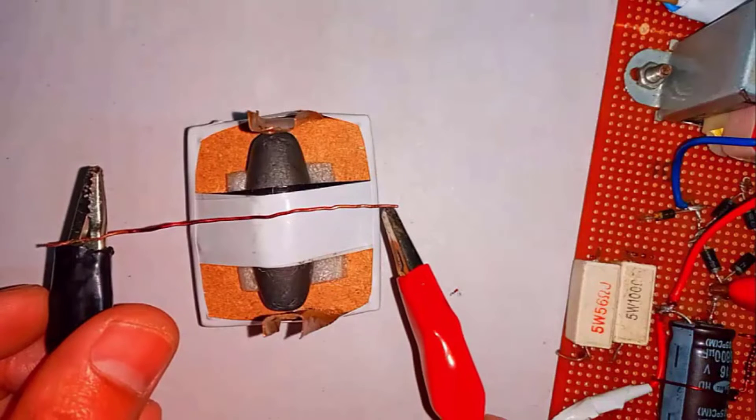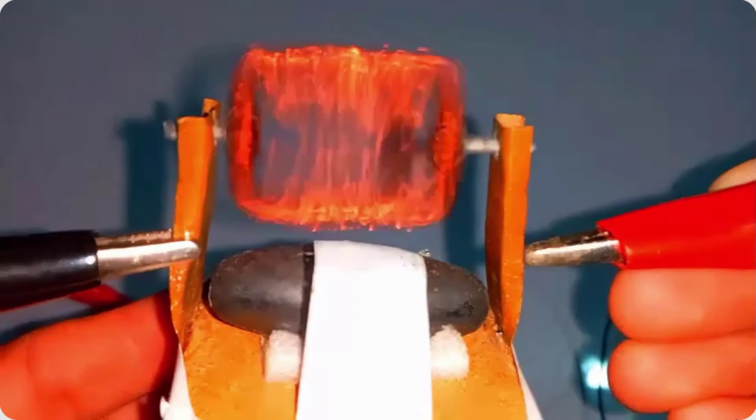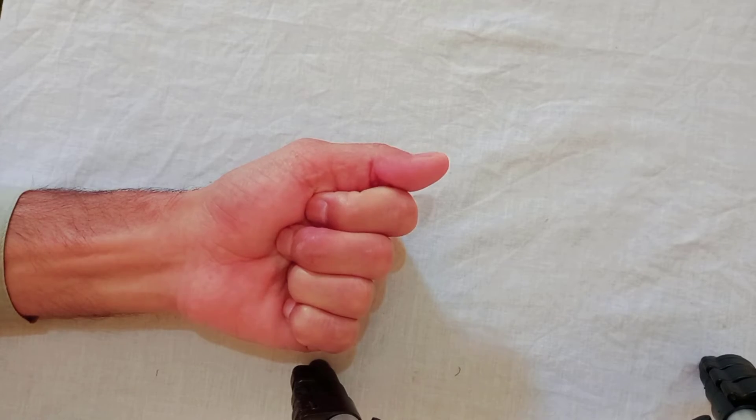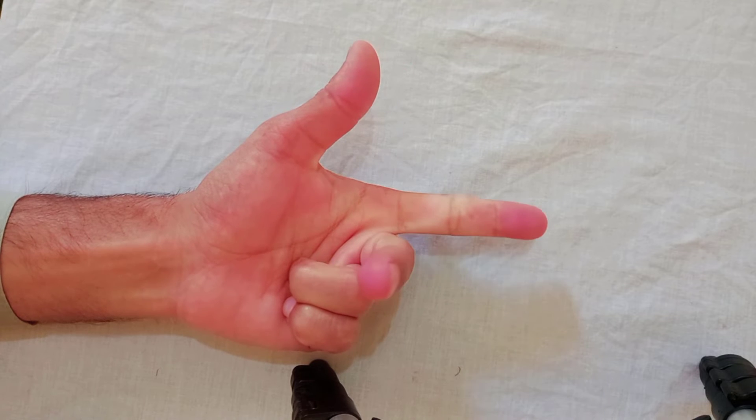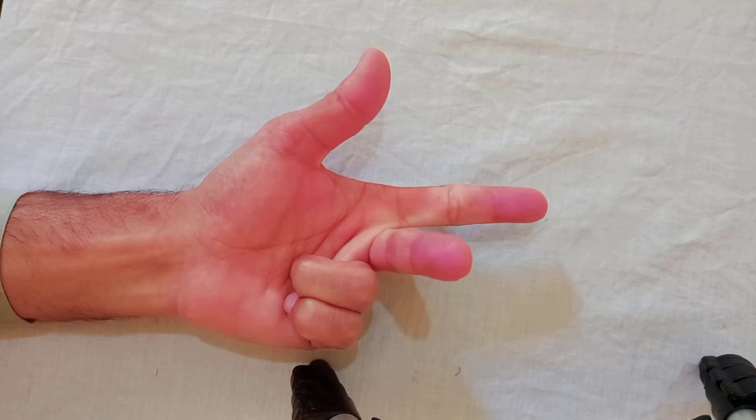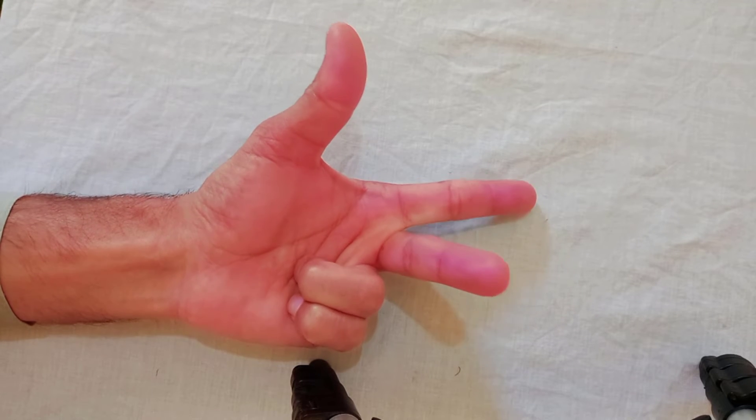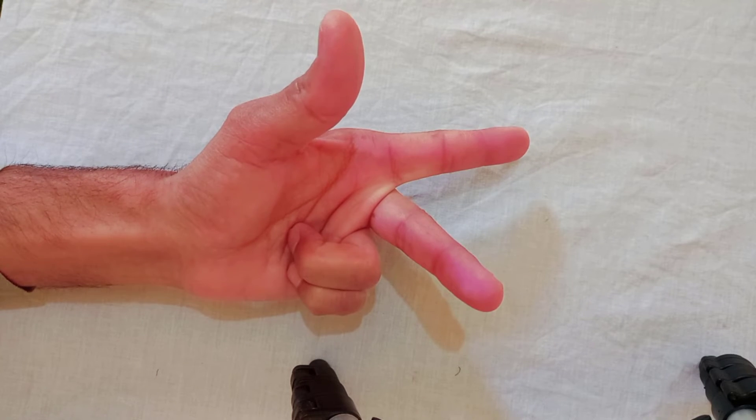To apply the left hand rule to a current carrying conductor or a coil placed in a magnetic field, stretch out the thumb, forefinger, and middle finger of the left hand, such that they are mutually perpendicular to each other.